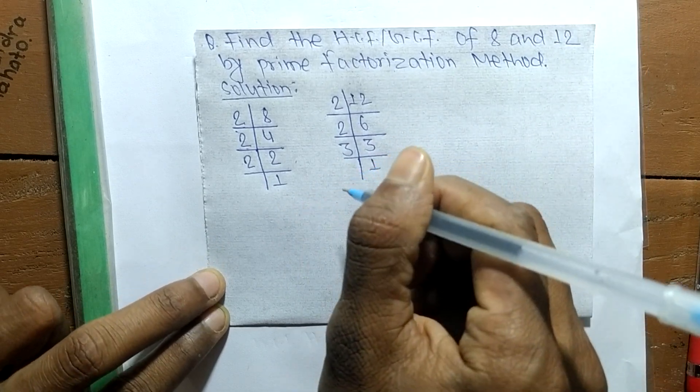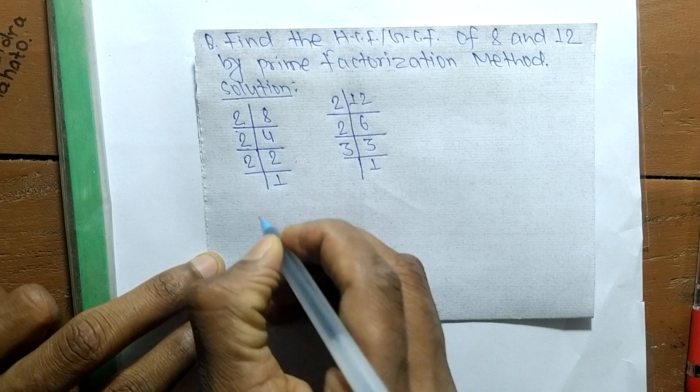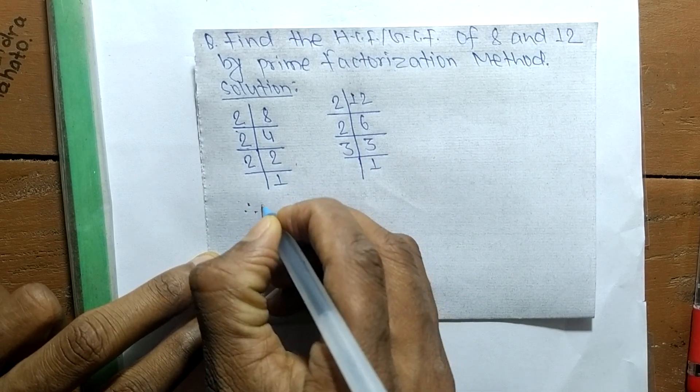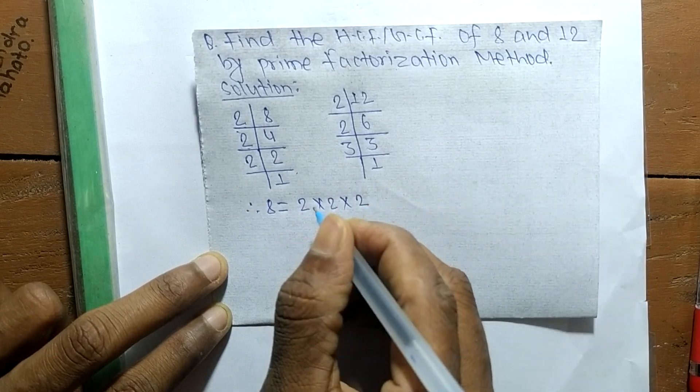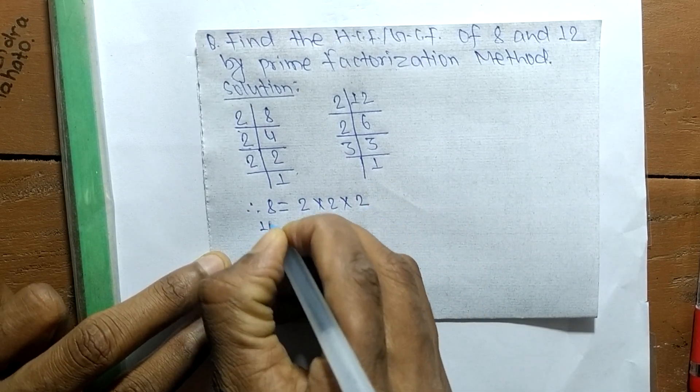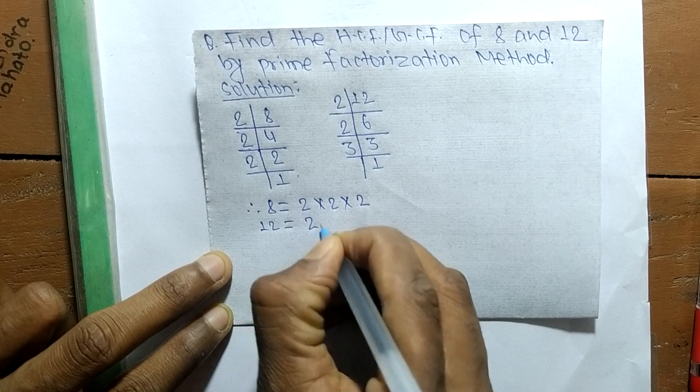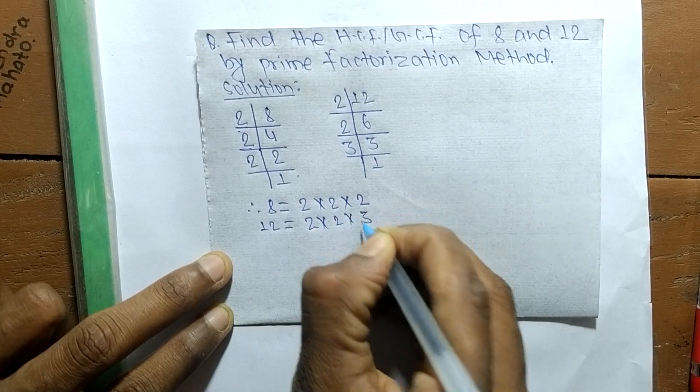After finding the prime factors, we can write 8 equals 2 times 2 times 2, and 12 equals 2 times 2 times 3.